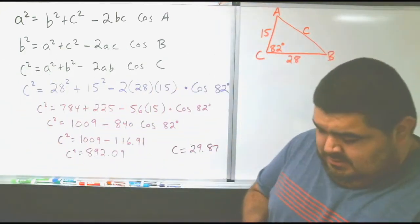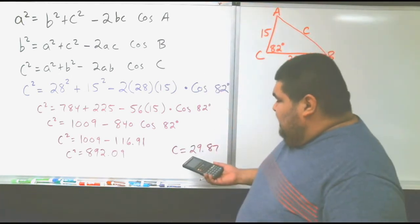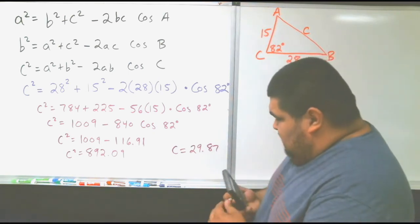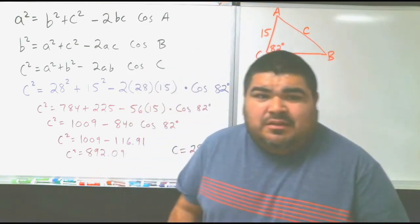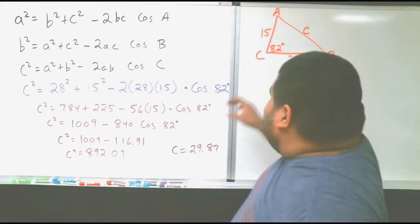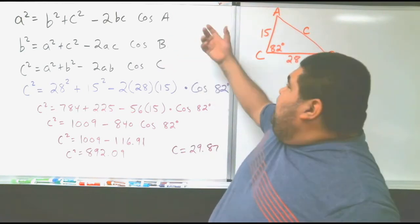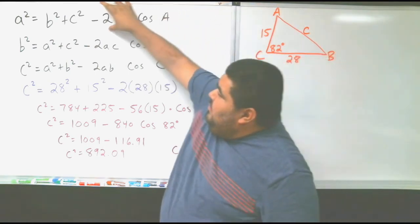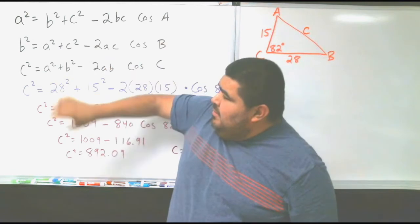So side C, again, is 29.87. So keep in mind, whatever side it gives you, whatever angle it gives you, that's the one you have to use. If it gives you angle B, then use the one in the middle. If it gives you angle A, use the one on top. If it gives you angle C, then use the one in the bottom.